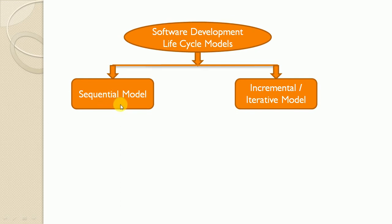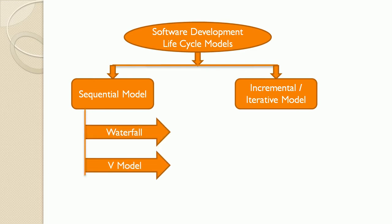So let's understand what is Sequential Development Model. The Sequential Model describes the software development process as a linear sequential flow of activities. This means that any phase in the development process should begin only when the previous phase is complete. Sequential models are best suitable for a smaller size of project where all SDLC activities are carried out one after another for the entire project. Best examples of sequential models are Waterfall and V-Model.